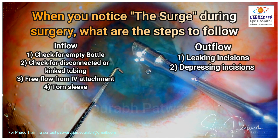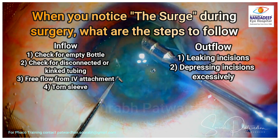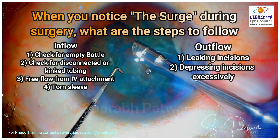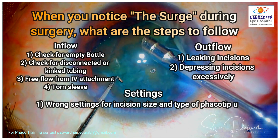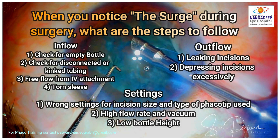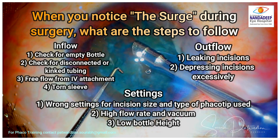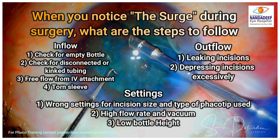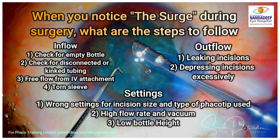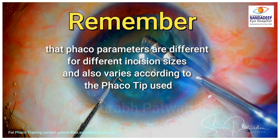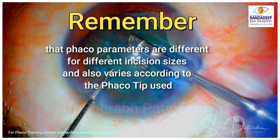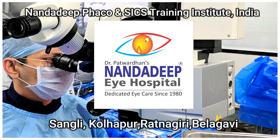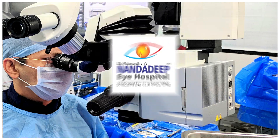If there is a torn sleeve leaking fluid, check the outflow: look for any leaking incisions as in this case, or if you are depressing the incision too excessively during surgery causing higher outflow. Also check the settings — remember that for each incision size and type of phaco tip used, different settings must be used. If you have set very high flow rate and vacuum but placed the bottle too low for those parameters, you may get the surge. FACO parameters are different for different incision sizes and vary according to the type of FACO tip used, so use appropriate settings.